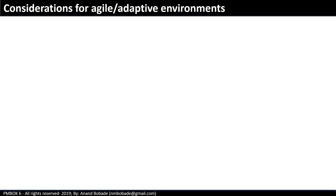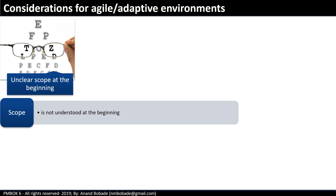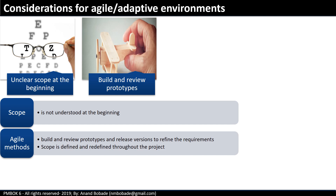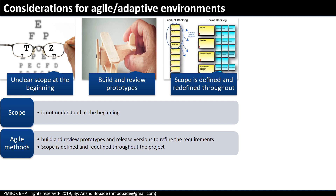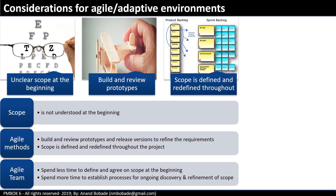What are the considerations for agile and adaptive environments? Agile projects will have an unclear scope at the beginning — sometimes the business doesn't know the product requirements. They might say, 'we want to develop the best TV in the market,' but the project team may need to build a prototype and develop product understanding through that process. Agile sprints are executed to refine the product until it meets customer requirements, and scope is defined and redefined throughout the project lifecycle. Agile teams spend less time defining and agreeing on scope at the beginning; however, they spend much more time on ongoing discovery and refinement as part of each sprint iteration.